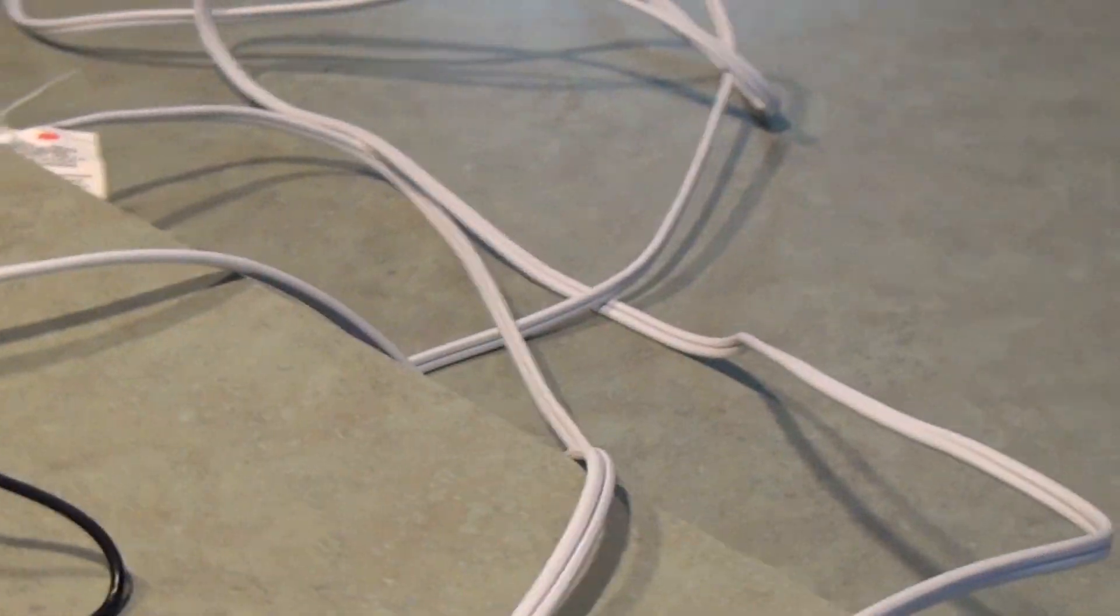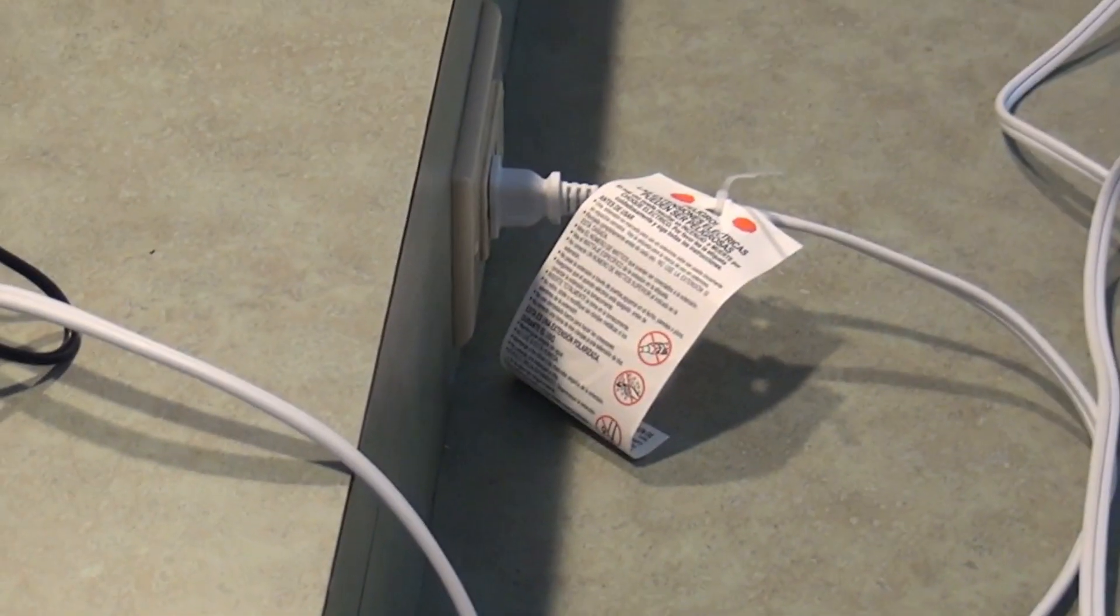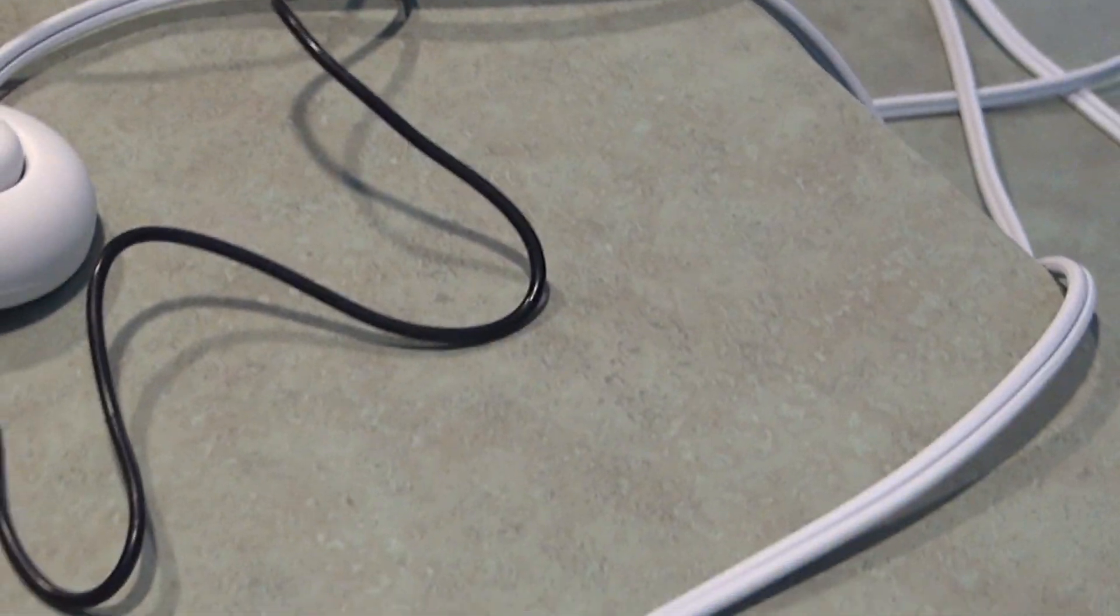This white cord you see here is just plugged into the wall. It's an extension cord. You can buy these inexpensively on Amazon or a big box store.